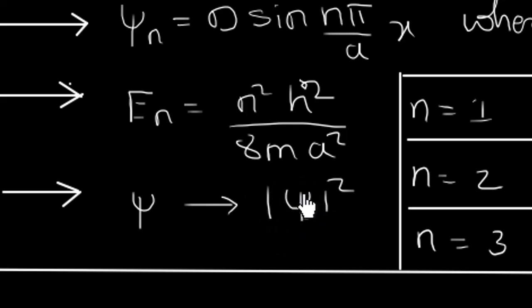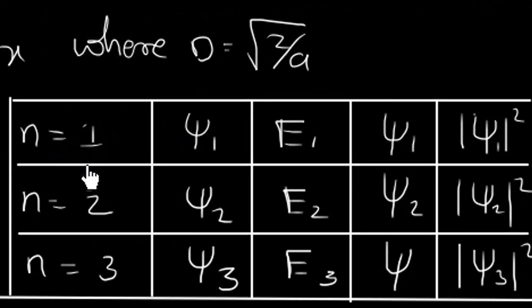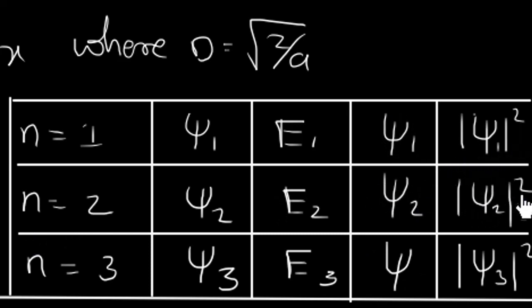Here we are considering three cases: case one is for n=1, case two for n=2, and case three for n=3. For each case we will find the eigenfunction ψ₁, ψ₂, and ψ₃, then calculate the energy eigenvalues E₁, E₂, E₃, and then the probability densities |ψ₁|², |ψ₂|², and |ψ₃|².